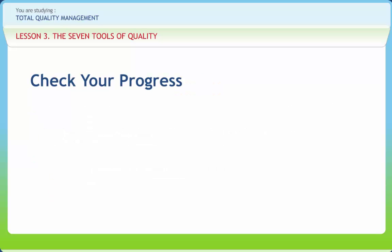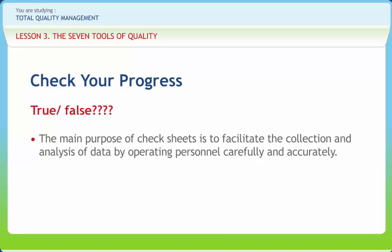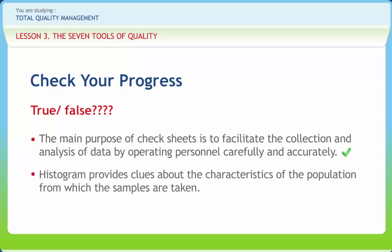Now let us check if we have understood the various concepts discussed in this lesson clearly. The main purpose of check sheets is to facilitate the collection and analysis of data by operating personnel carefully and accurately. Right or wrong? Right. Histogram provides clues about the characteristics of the population from which the samples are taken. Right or wrong? Wrong. Check sheets do not often confuse with data sheets and checklists. Right or wrong? Right.